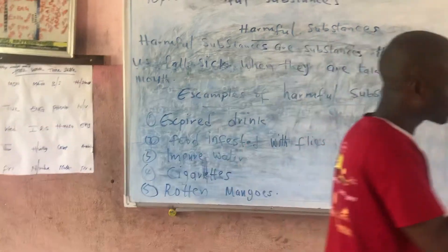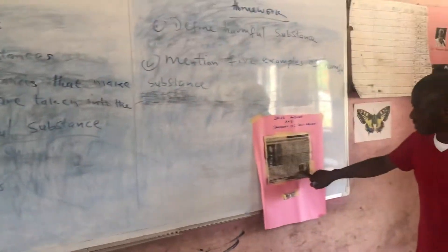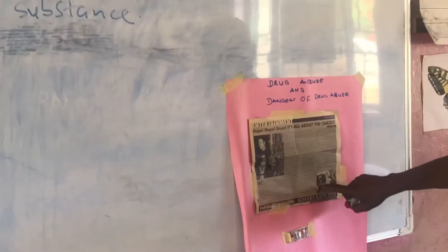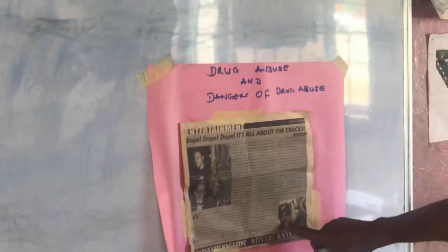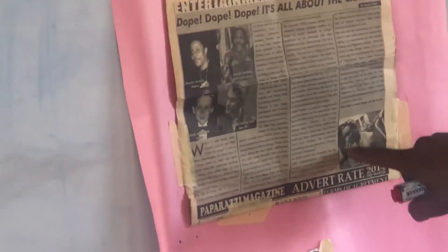The next harmful substance is cigarettes. You can see this person holding it to his mouth — smoking is harmful to your health.